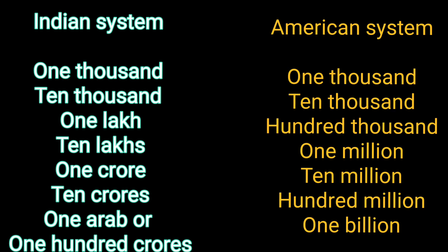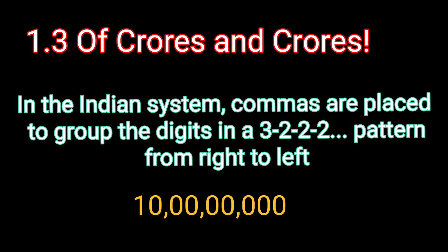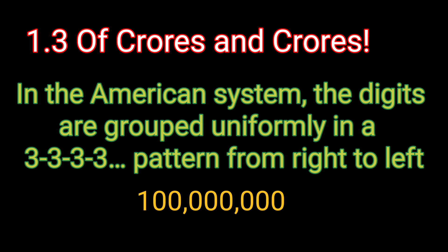For the American system, it starts with 1,000 and goes up to 1 billion: 1,000, 10,000, 100,000, 1 million, 10 million, 100 million, and then 1 billion. You will also learn about comma placement. In the Indian system, commas are placed in a 3, 2, 2, 2, 2 pattern from right to left. In the American system, digits are grouped uniformly in a 3, 3, 3, 3, 3 pattern from right to left.